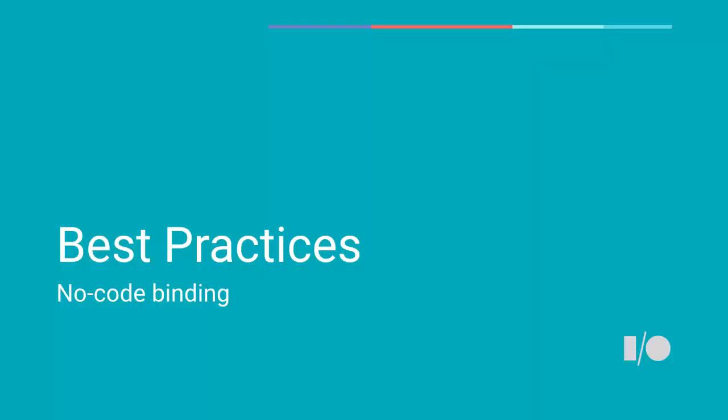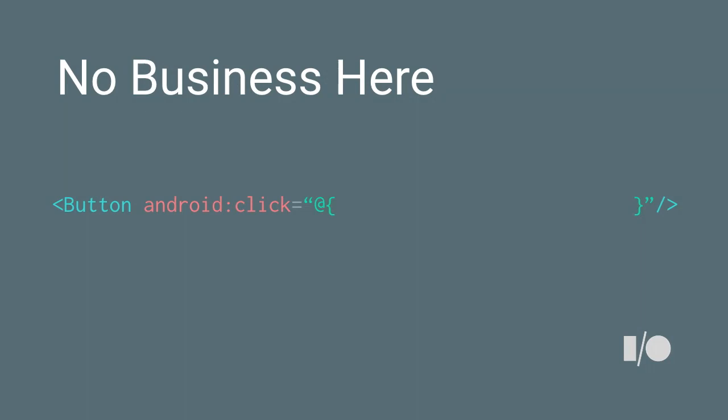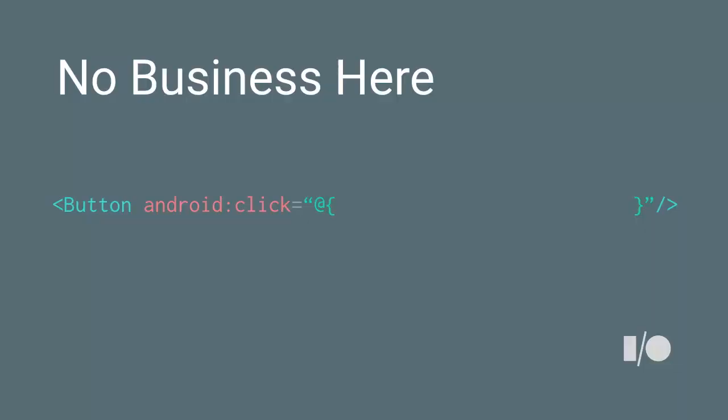I want to quickly go through some best practices because data binding is very powerful, but just because there's a way to do things with data binding doesn't mean you should do everything with it. You need to be careful about what expressions you put there. If you put an expression like: when you click this button, send the money — you should not do this. Sending the money is completely about your application — your business logic. It has nothing to do with your UI. The only thing you care about is that the user clicked on that button. This is where the responsibility of data binding stops.